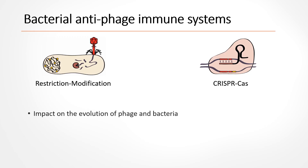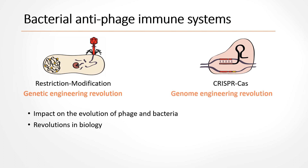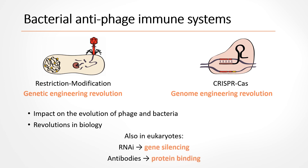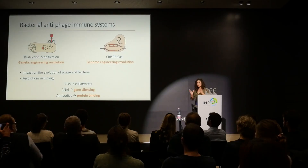These systems also have great potential in therapeutics and biotechnology. The discovery of new complex immune systems in the past has led to revolutions in biology. For example, restriction-modification systems gave us restriction enzymes which revolutionized genetic engineering, and CRISPR-Cas revolutionized genome engineering. Eukaryotic immune systems have also been harnessed — RNAi for gene silencing, and antibodies used as biological drugs to treat cancer.